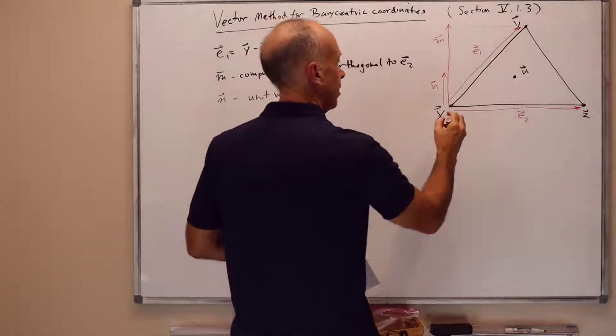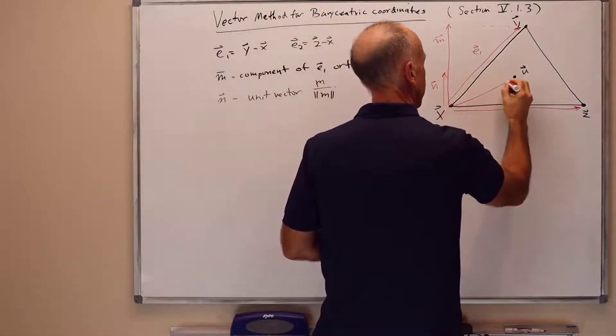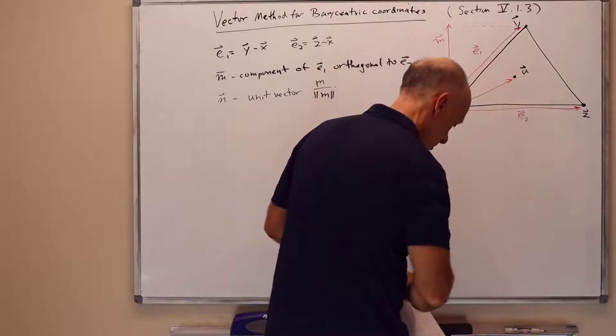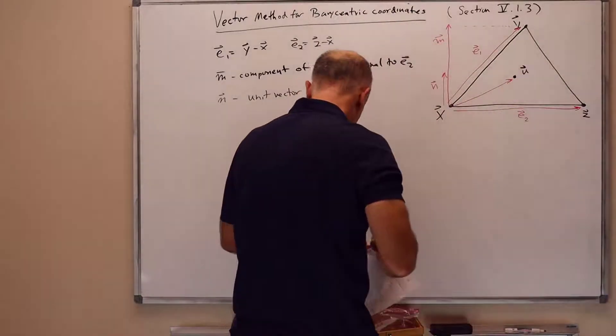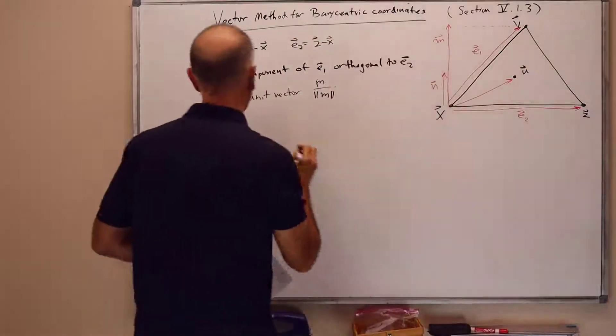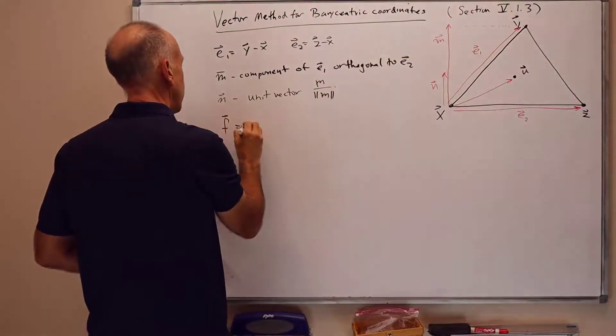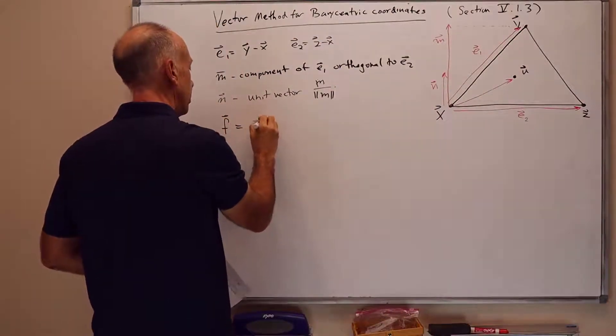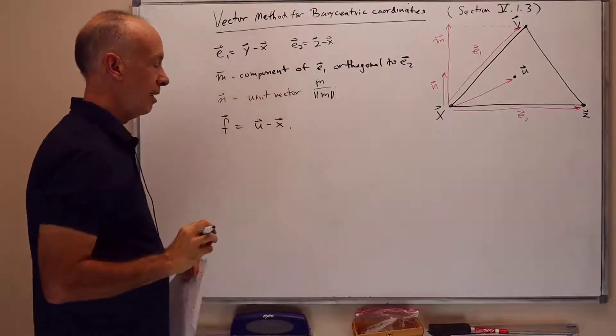And finally we also want the vector f from x to u, and so f equals u minus x.